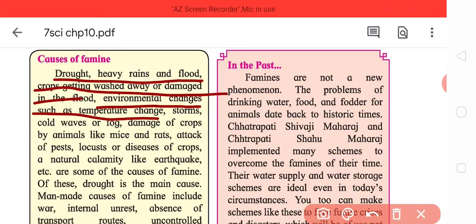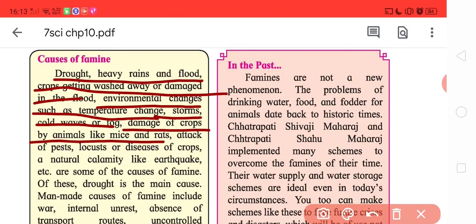In March there is standing crops and in April the crops are sown. A hailstorm occurred in the whole of North India including Punjab and that destroyed much of the standing crops. Though that didn't result in famine, but if these cases continue to occur it might be. Storms very common in Odisha which is frequently affected by cyclones, cold waves or fog, damage of crops by animals like mice and rats.